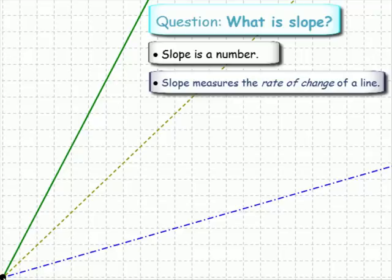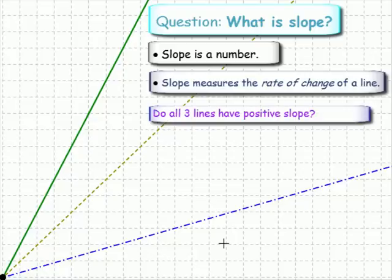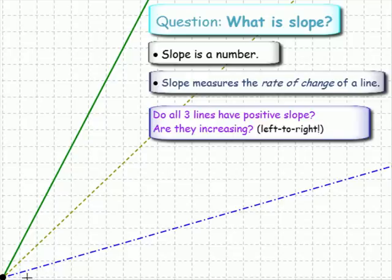First, let's check: do they all have positive slope? How do we do that? We look from left to right to see whether they're increasing. The way we read, from left to right, this one's going up - positive slope.